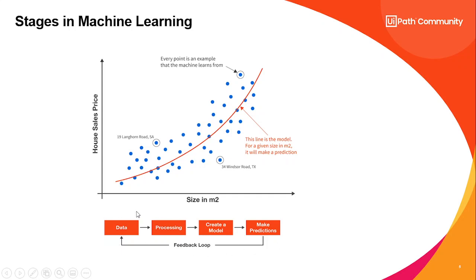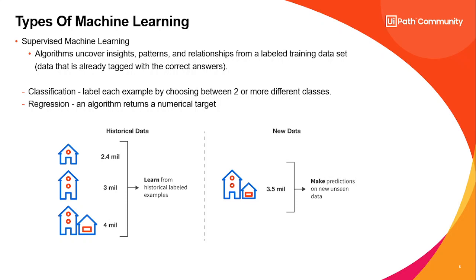Now, types of machine learning. Machine learning is classified into many types: supervised, unsupervised, reinforcement learning, and deep learning. First, supervised learning: algorithms that uncover insights, patterns, and relationships from labeled training data. The data will already be tagged to the correct answers. The algorithms are able to learn how the feature is related to the target and make predictions on future data. Under supervised learning, we have classification and regression. Classification labels each example by choosing between two or more different classes.